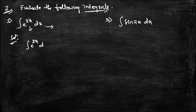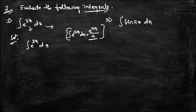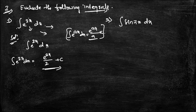First question: integral of e^(2x) dx. The formula we use here is: integral of e^(ax) dx = e^(ax)/a + C. So integral of e^(2x) dx = e^(2x)/2 + C. This is the answer to the first question. In place of 'a' there is 2, so the answer is e^(2x)/2 + C.